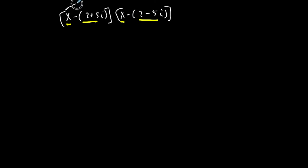Here we go: first, multiply first, x times x is x squared, that's an easy one. Outer: x times this whole thing here, minus x times two minus five i, I'll deal with distribution later. Inner: this times this whole thing, minus x times two plus five i, I'll deal with distribution later.